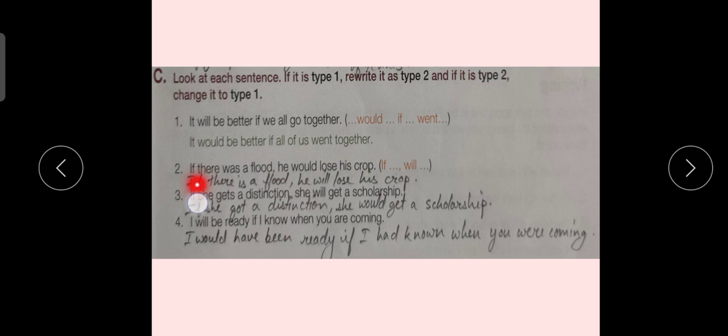Sentence number 2. If there was a flood, he would lose his crop. Hint If dash will dash. Sentence will be If there is a flood, he will lose his crop.